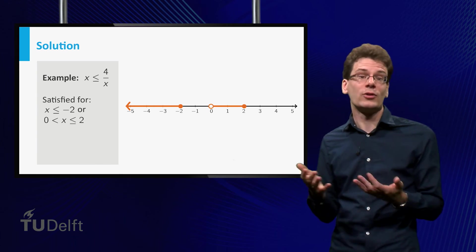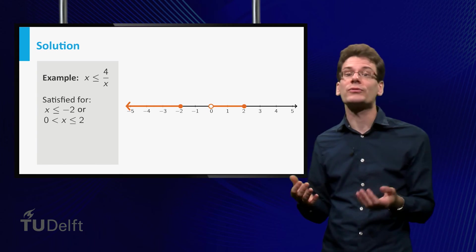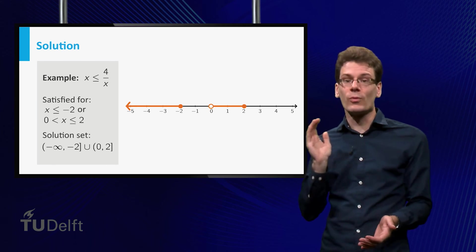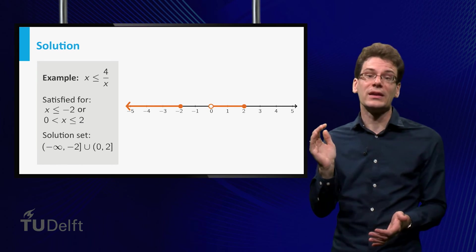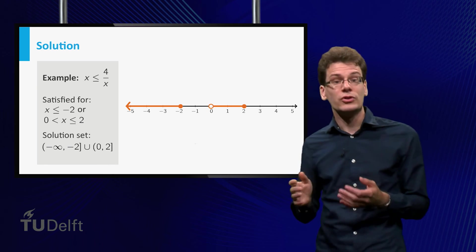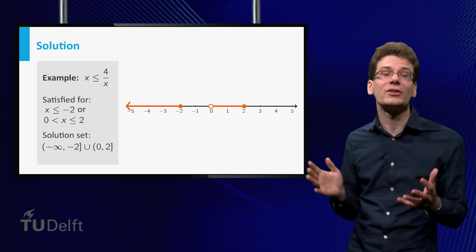The solution set can also be described in terms of intervals. Be aware that several ways of notation exist, but it is common to use a round bracket if the boundary is not part of the interval, and a square bracket if it is. The u-shaped symbol in the middle indicates that we take a union.